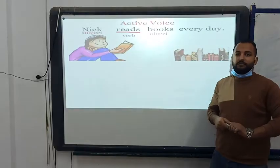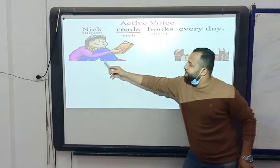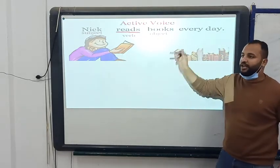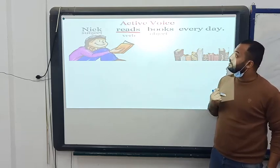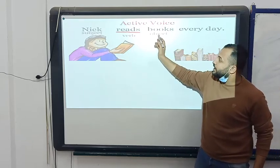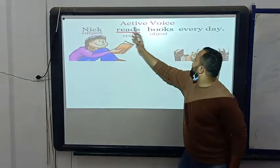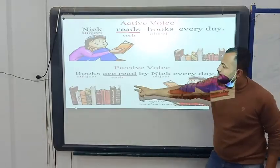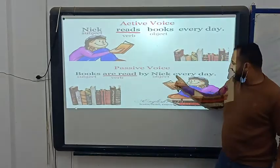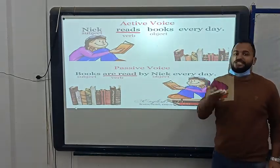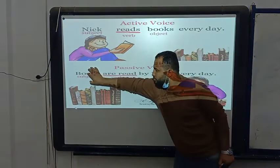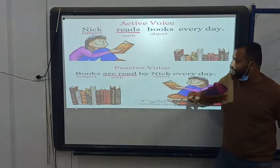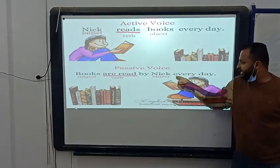A book is, but books are. So: object, then are, then past participle of the verb read — read, read, read. It will be: Books are read by Nick every day. The passive means to start with the object, which becomes the subject, then verb to be plus past participle, then by Nick every day.